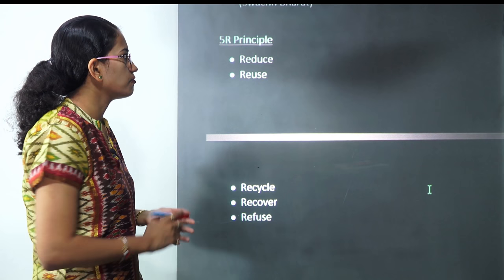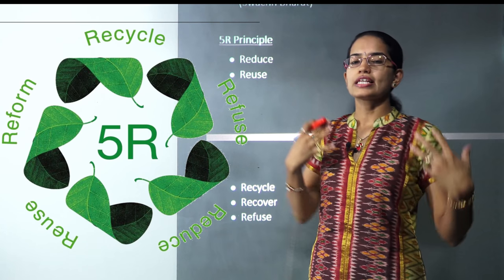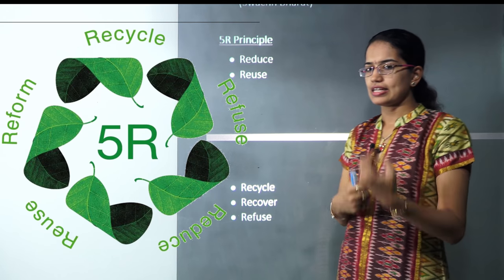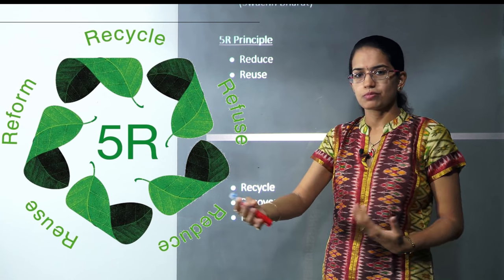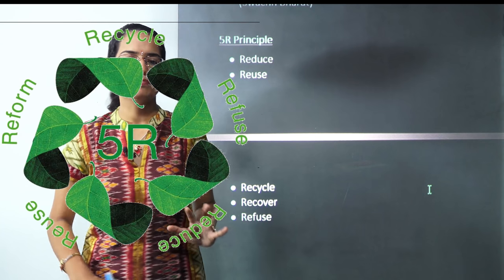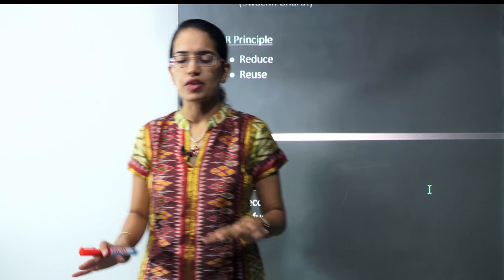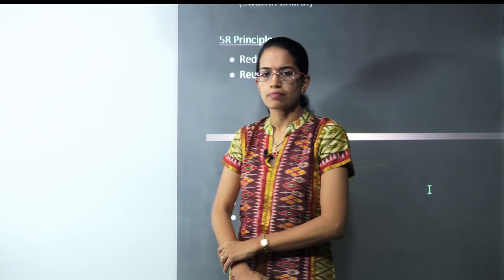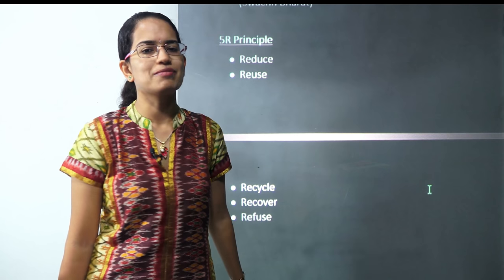For plastic, we have the concept of 5R. The 5R principle says: first, Reduce the use — pledge to reduce plastic use. Second, Reuse it from one purpose to another. Third, Recycle it — a thermoplastic bottle can be melted to form another plastic bottle. Fourth, Recover it from the atmosphere. Fifth, Refuse it. With this, we cover our third chapter of class 8. Rather than using a plastic chair, we might move to a wooden chair — those are small initiatives. Stay tuned for more updates. Have a great day.